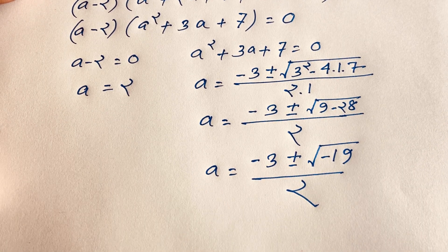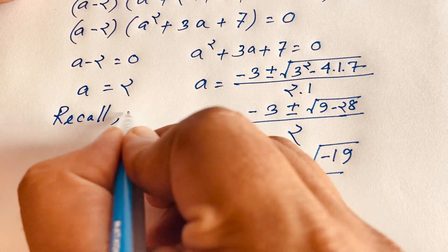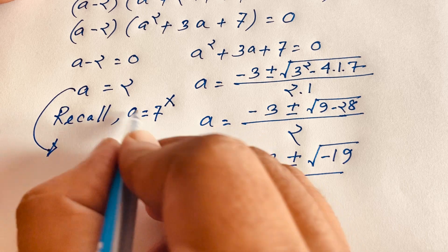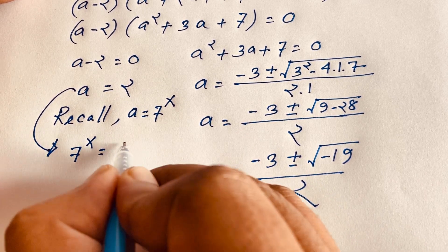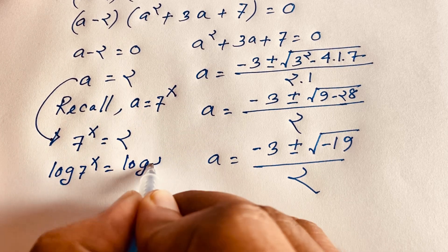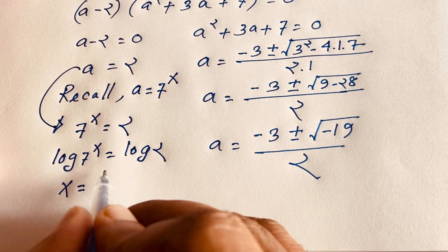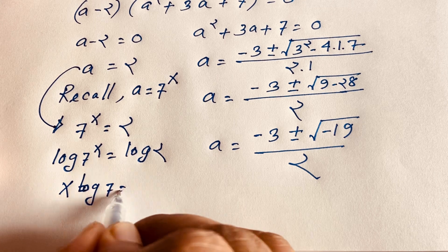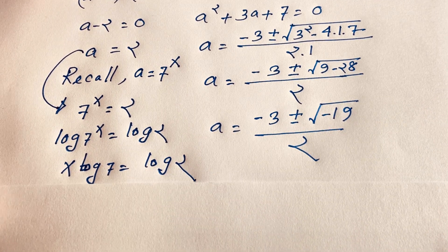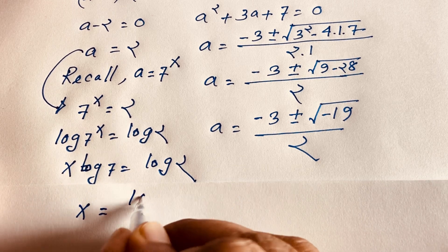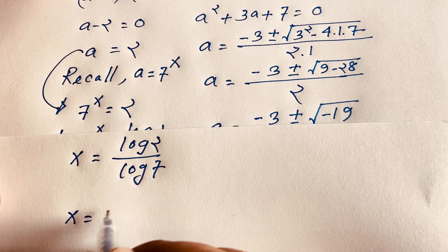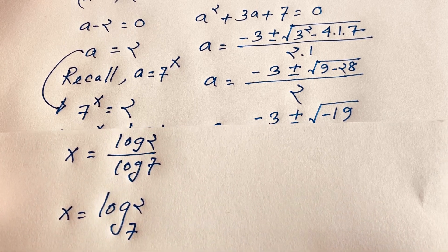Recalling that a equals 7 to the power x, for Case 1 we have 7 to the power x equals 2. Taking the logarithm of both sides: log(7^x) equals log 2, so x times log 7 equals log 2. Dividing both sides by log 7, we get x equals log 2 over log 7, which is x equals log base 7 of 2. This is our final real answer.